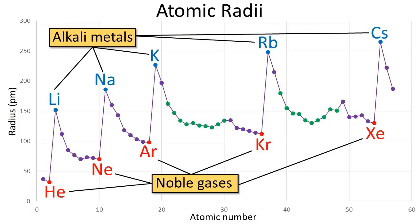What if we were going down a group of the periodic table? If we take a look at the graph, we can see that for both the alkali metals and the noble gases, the atomic radius seems to increase as we go down a group. Cesium, for instance, has a larger atomic radius than lithium, and xenon has a larger atomic radius than argon.